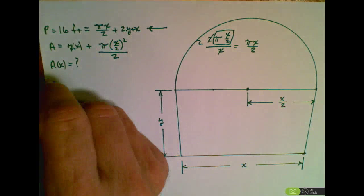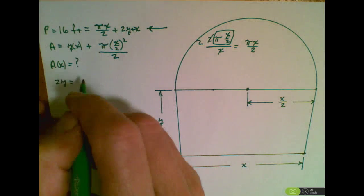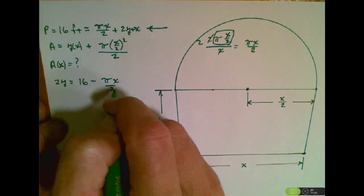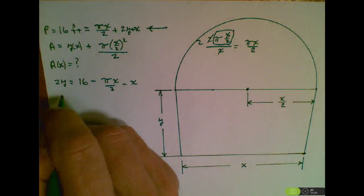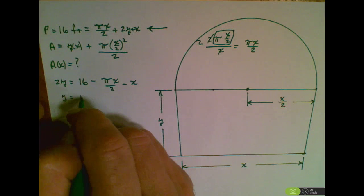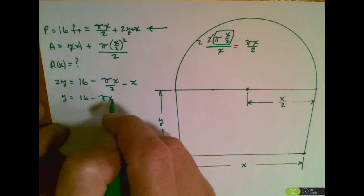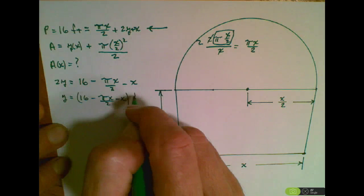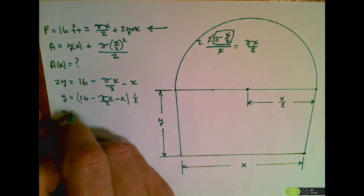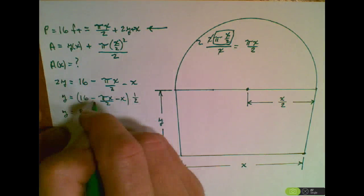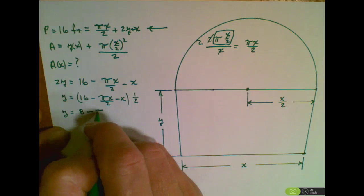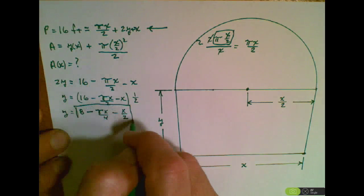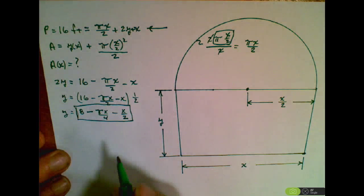So we'll say 2y is equal to 16 minus πx/2 minus x. Then y is equal to, and I'm going to multiply both sides by 1/2, distributing the 1/2. I'm going to get 1/2 of 16 is 8, 1/2 of the next term is minus πx/4 minus x/2. So now I have an expression that I could substitute in for y in my main equation.